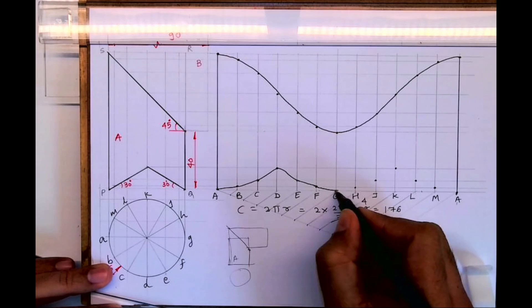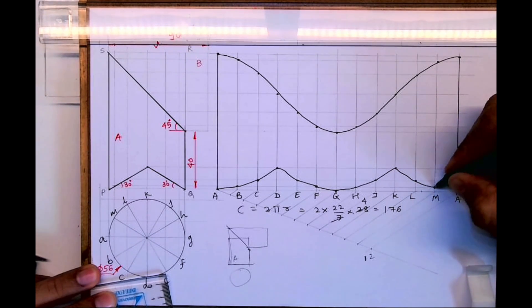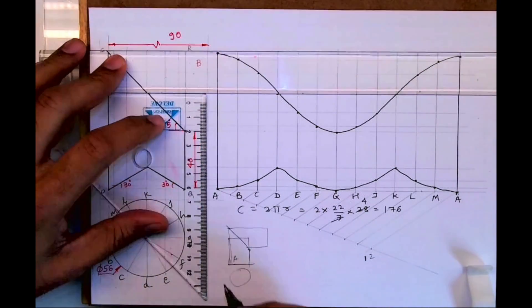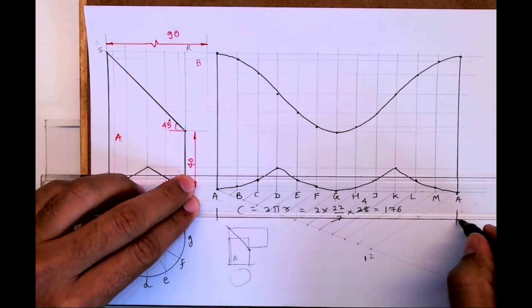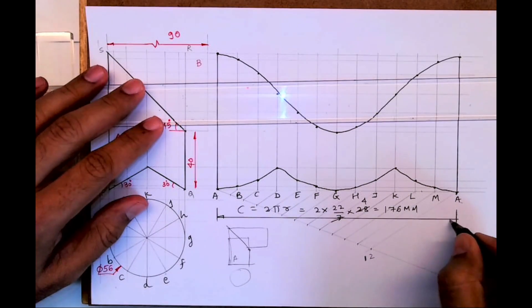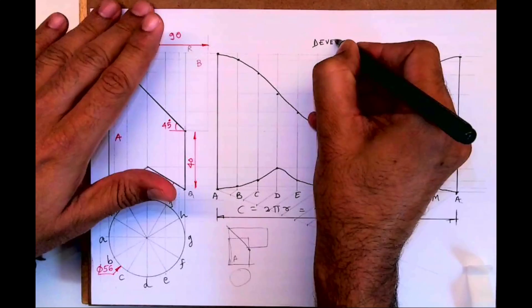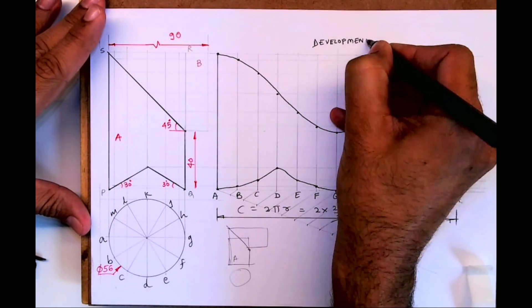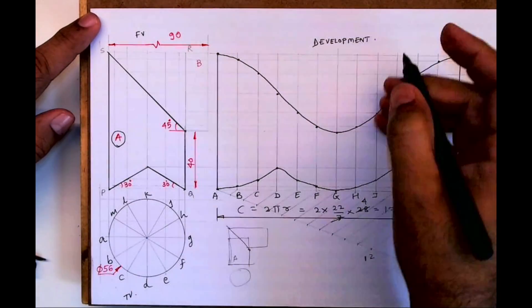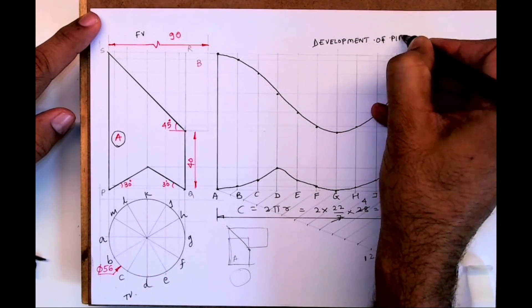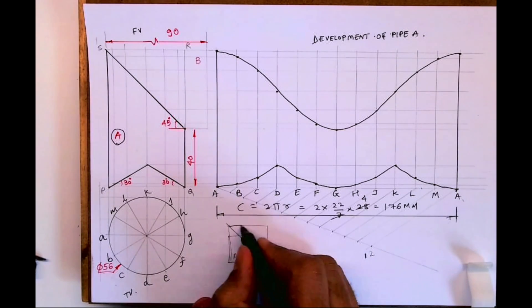Remember, it's a very simple topic. The only thing you need to do is go step by step — treat it as a cylinder with multiple cuts and you will get it. This is the circumference of pipe A. So we did pipe A. Now, what if we have to do pipe B? This is pipe B.